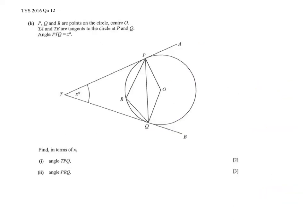Next question: TYS 2016, question number 12, part B. P, Q, and R are points on the circle. TA and TB are tangents to the circle. The moment we have tangents, we know they meet the radius at 90 degrees. TO is also tangent at 90 degrees to the radius. And we know that tangents from external points are equal.